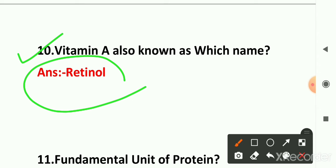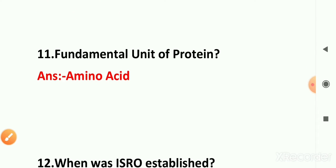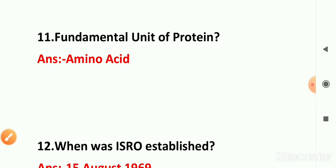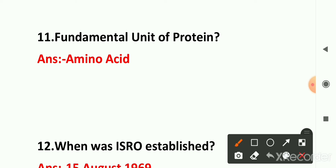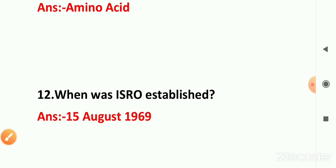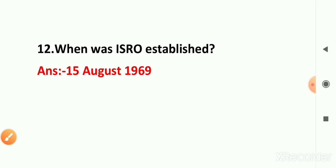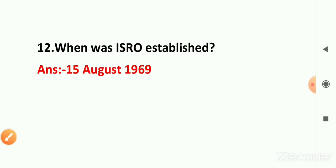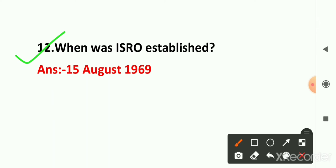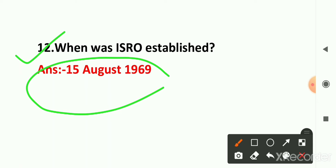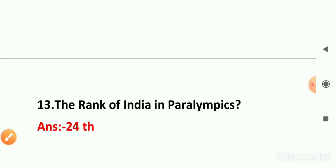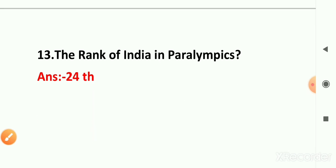Question number 11: what is the fundamental unit of protein? Amino acid is the right answer. Question number 12: when was Israel established? Israel was established on 15 August 1948.